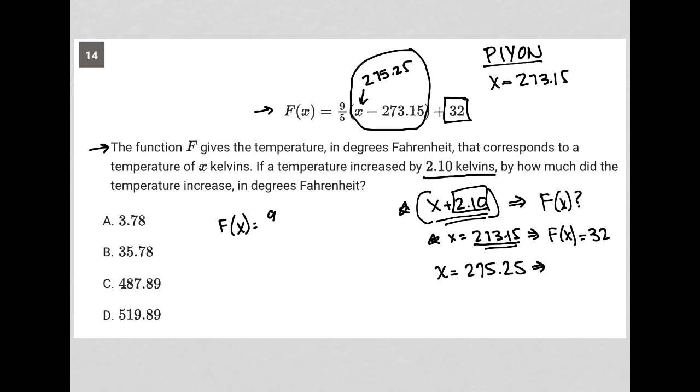f of x is equal to 9 fifths times 2.10 plus 32. So all I have left to do is use my calculator and figure out what is 9 fifths times 2.10 plus 32. What I get there is that f of x is equal to 35.6.